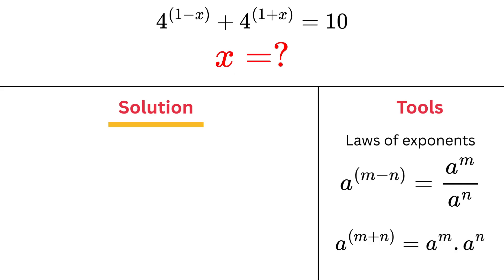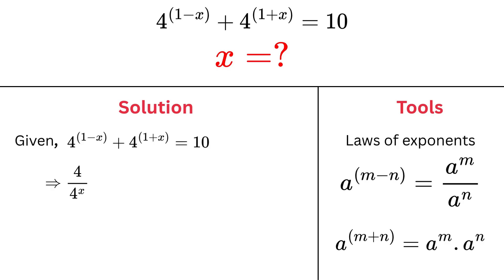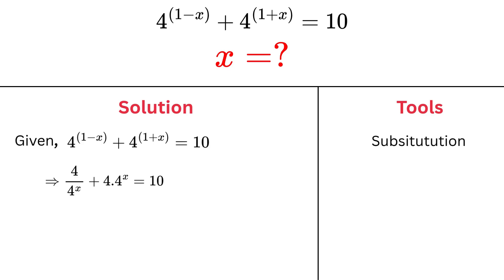Step 2: Start solving. The given equation is 4 to the power 1 minus x, plus 4 to the power 1 plus x, equals 10. Let's apply the exponent rules we just discussed. The first term becomes 4 divided by 4 to the power x, and the second term becomes 4 times 4 to the power x. So the equation becomes 4 over 4 to the power x, plus 4 times 4 to the power x, equals 10. Now let's make it easier by substituting — let 4 to the power x equal y. Then the equation becomes 4 over y plus 4y equals 10.